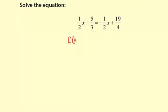So f of x is going to be the left side of the equation which is 1 half x minus 5 thirds. And then g of x is going to be equal to the right side of the equation which is negative 1 half x plus 19 fourths.